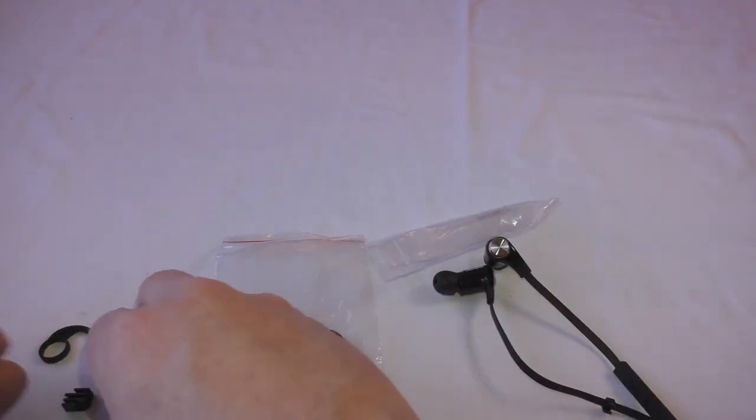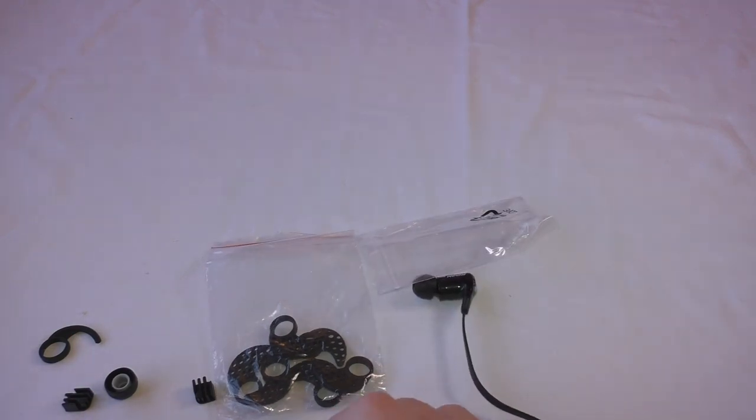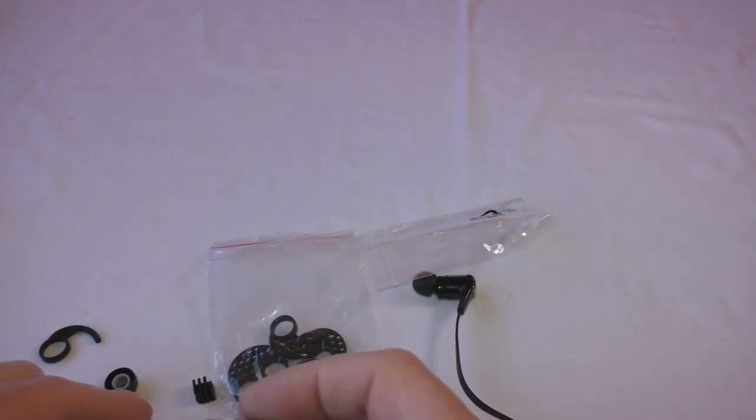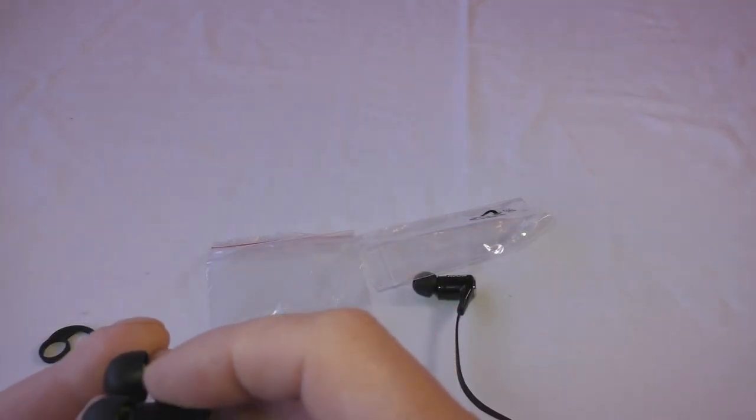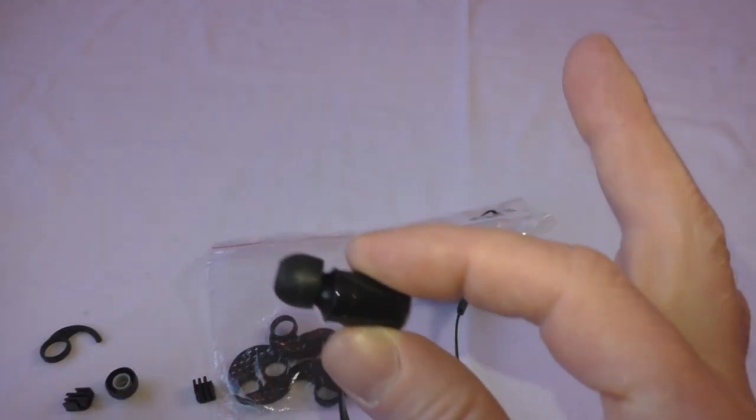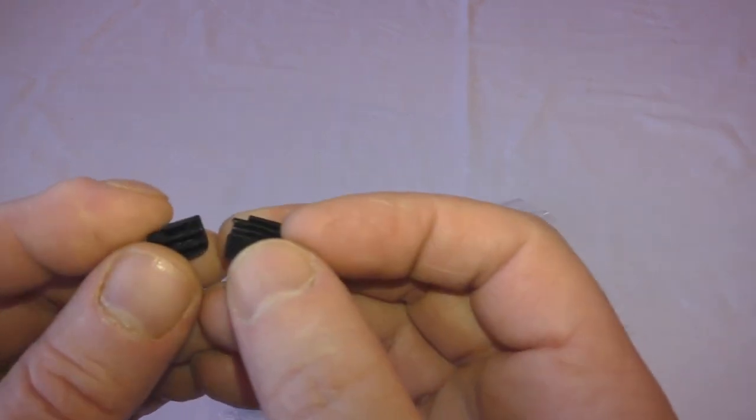And we have a smaller set of ear tips than what's on. Yeah, they're smaller than what we're on, and these ones are slightly bigger. So they've obviously got the midsize one actually fitted, and then they've got some other sizes. Another thing that they've got here, which I'm guessing is to shorten your cable, they're like these little clips.